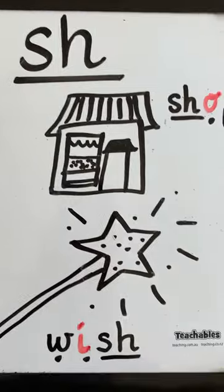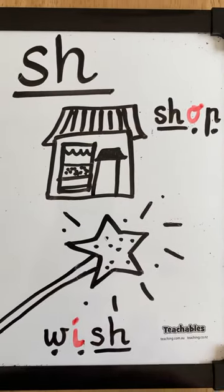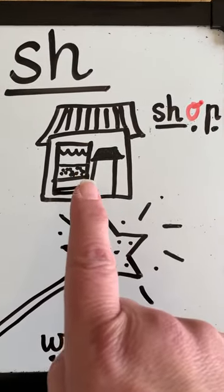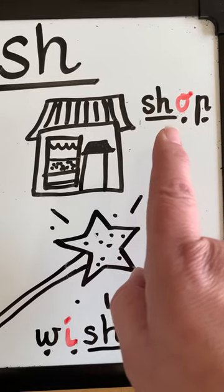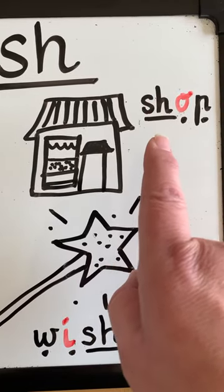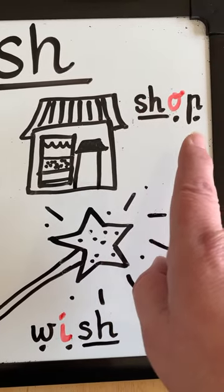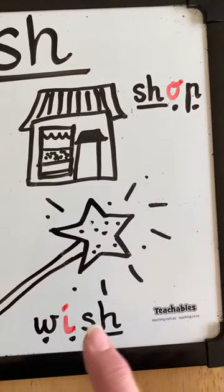For SH, if we go to the beginning and end, we've got a picture of a SHOP. There it is at the start: SH, O, P — SHOP.